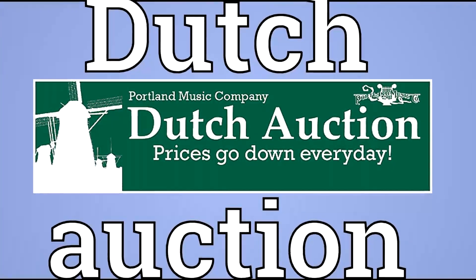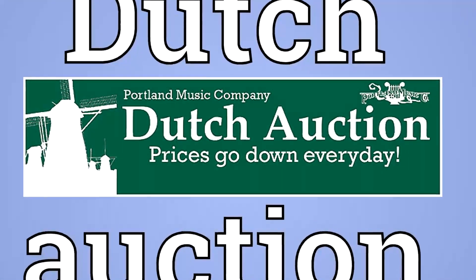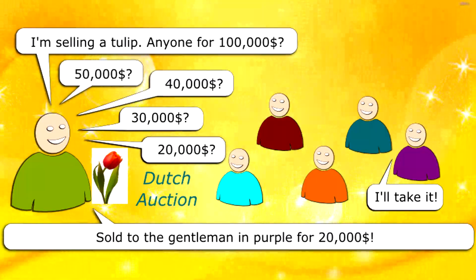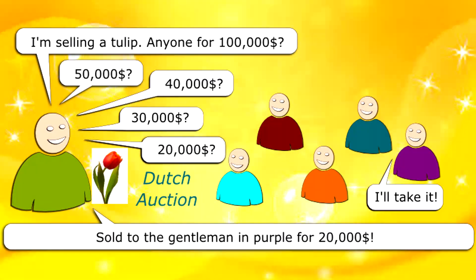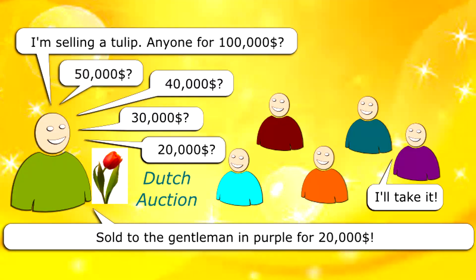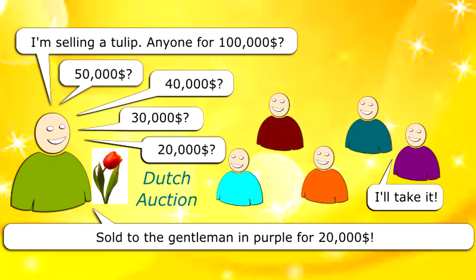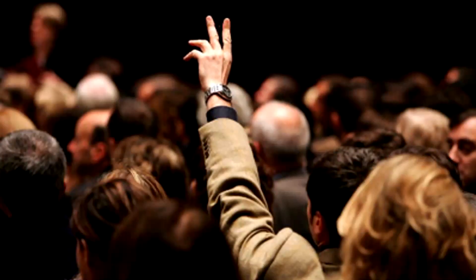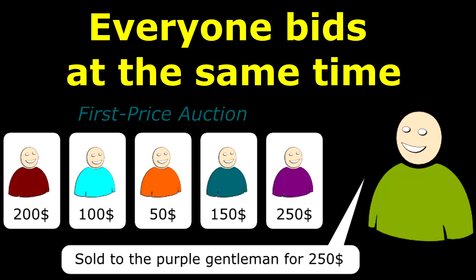Dutch auction, also known as an open descending price auction, is the inverse of the English auction. Whereas English auction bids start from a minimum and increase until no other participant offers more, in a Dutch auction it starts from a maximum and the price is lowered until a participant is willing to accept the auctioneer's price.